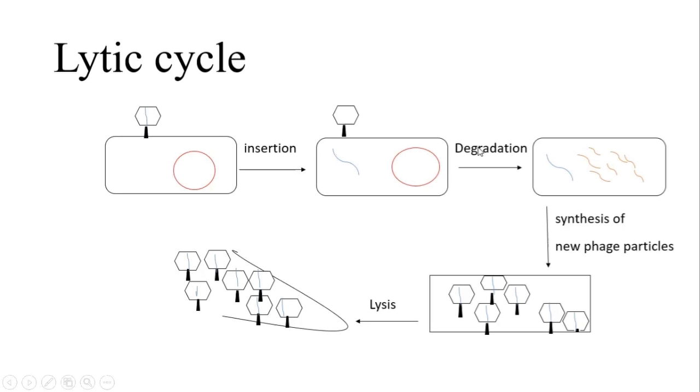This degradation of the bacterial genome allows the bacterial phage to take control over the cellular machinery of the bacterial cell. When the phage takes control, it starts producing new phage particles. During this process, the host cell becomes gradually weakened.